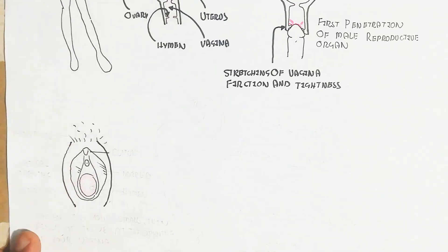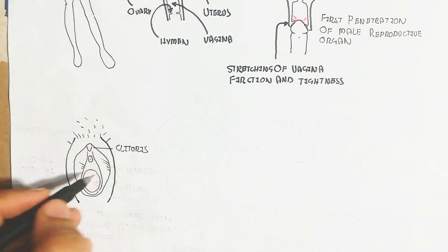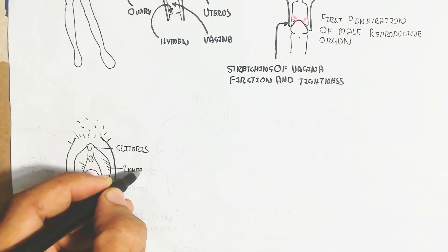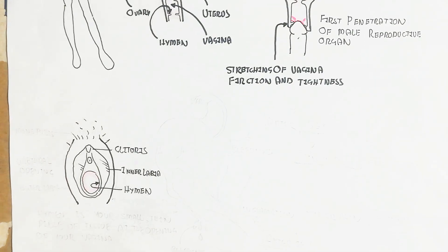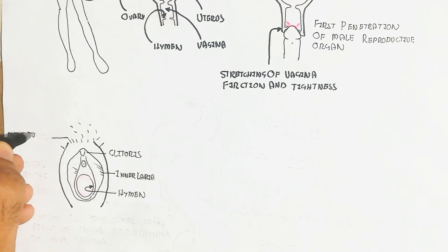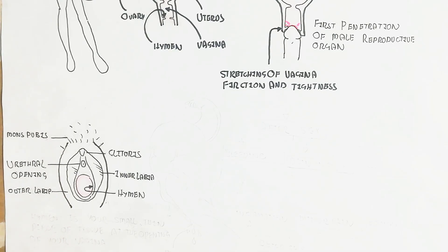Stretching of vagina and friction and tightness without hymen can also show bleeding sometimes. This is the clitoris, this is the inner labia, this is the hymen, this is the mons pubis, this is the urethral opening, and this is the outer labia.